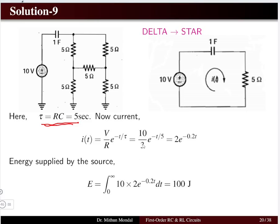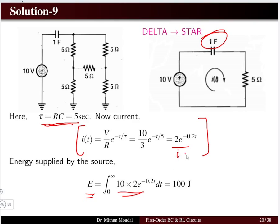With tau = R_eq × C = 5/3 × 1 = 5/3 seconds, current = (V/R)e^(−t/τ). Energy = integral of power (voltage × current) from 0 to ∞. This gives energy = 100 joules, combining transient circuit analysis with energy calculation.